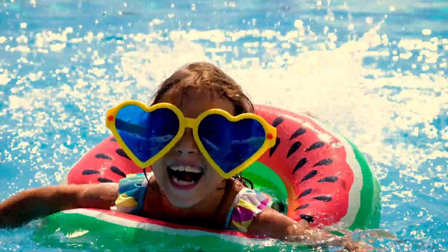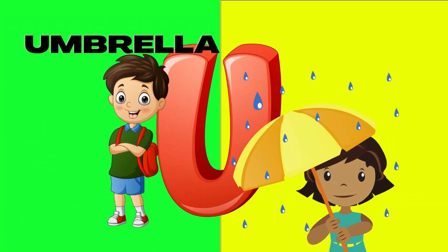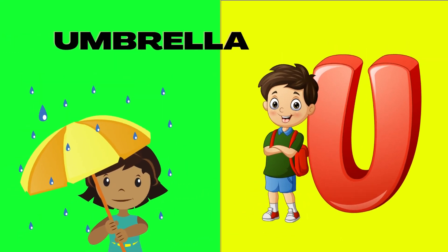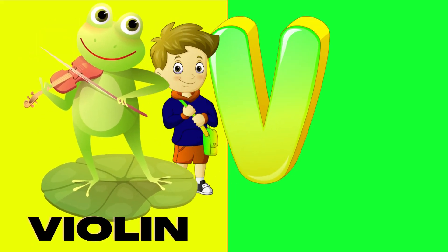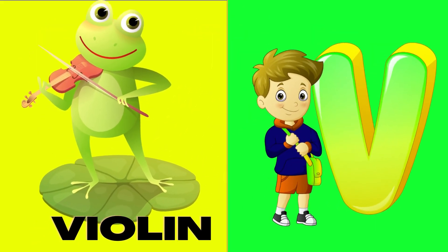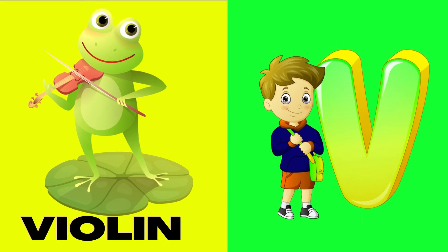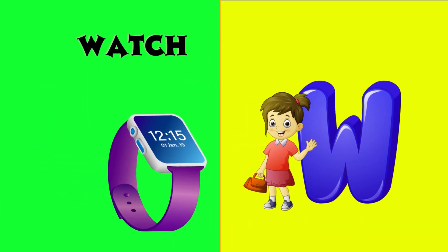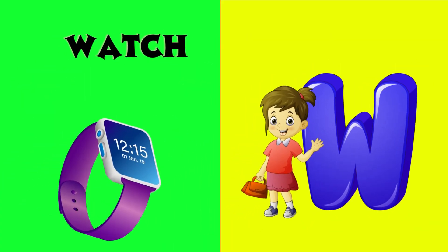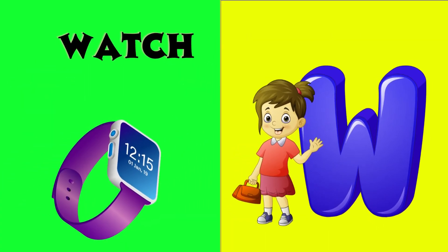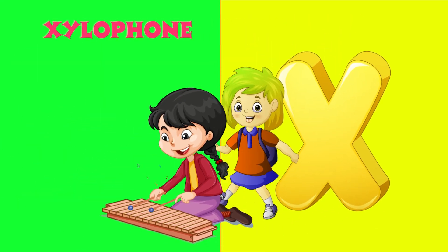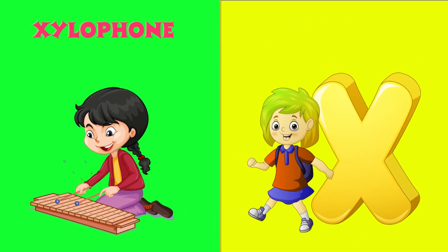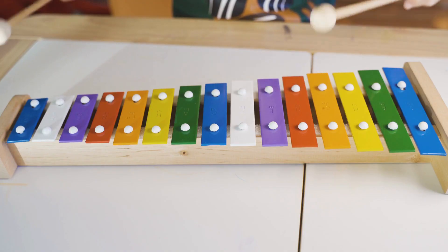U is for umbrella, u-u-umbrella. V is for violin, v-v-violin. W is for watch, w-w-watch. X is for xylophone, x-x-xylophone.